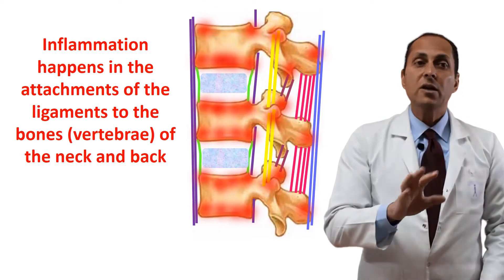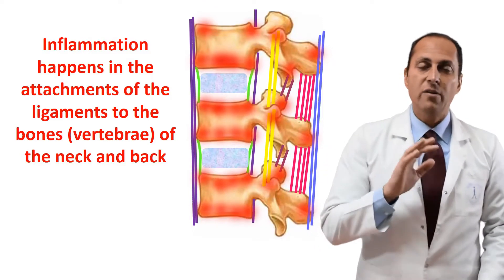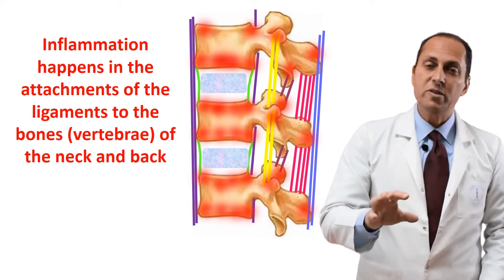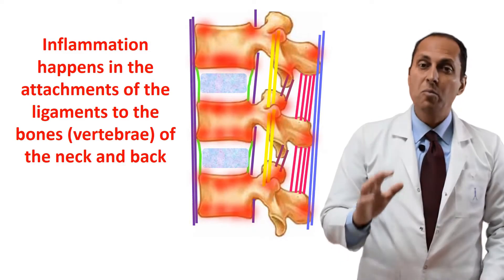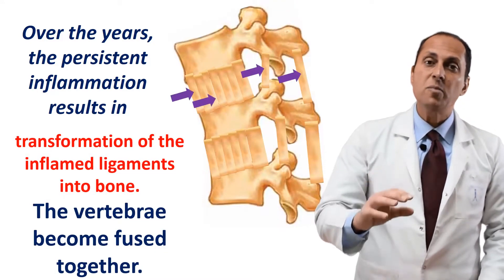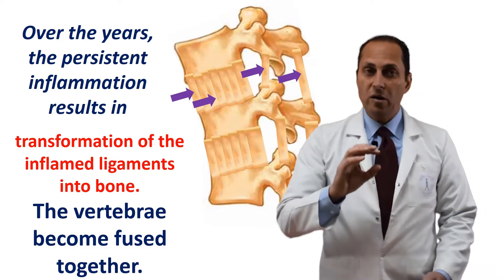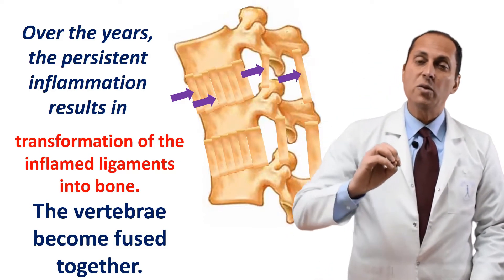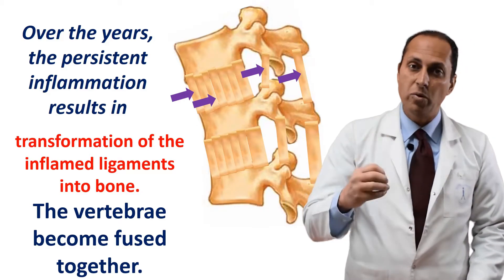Over the months, it is the same picture — progressing slowly, very slowly — with pain and stiffness of the neck and back, and movement limited because of pain. But what happens over the years? In those ligaments that were inflamed, something happens: they turn into bone. They are no longer soft tissues — they turn into bone tissue.